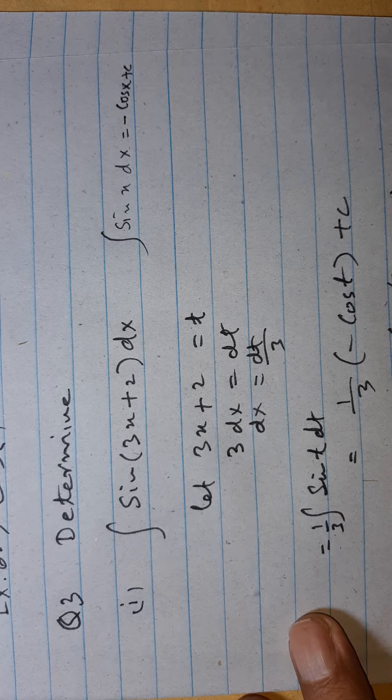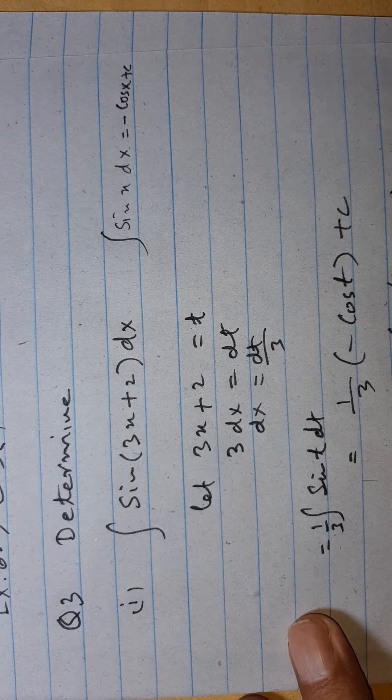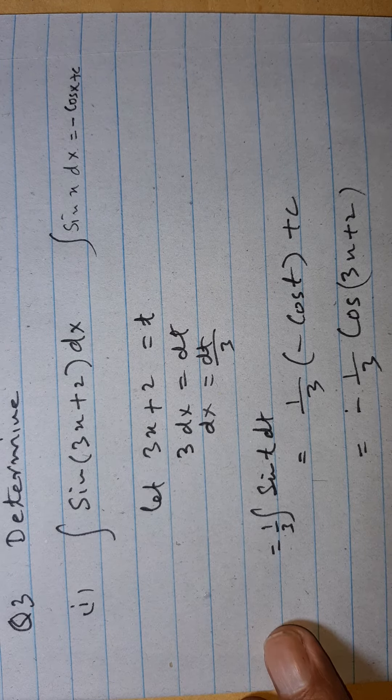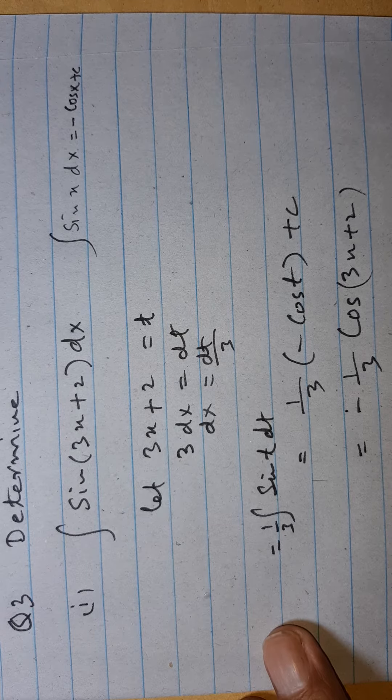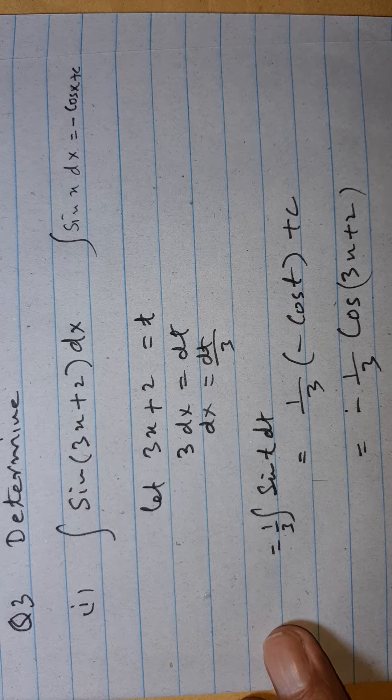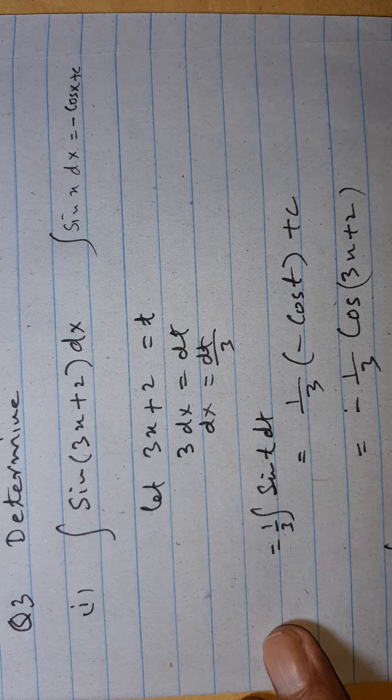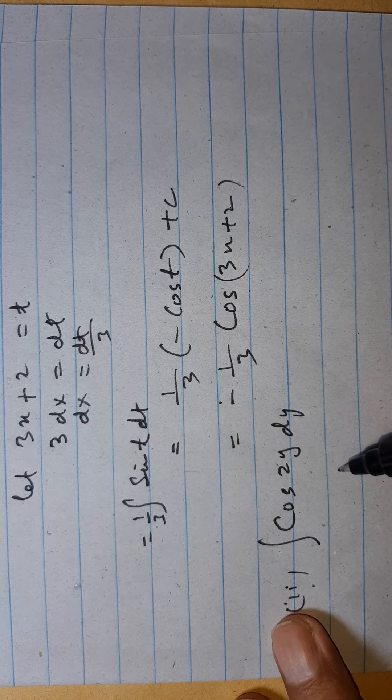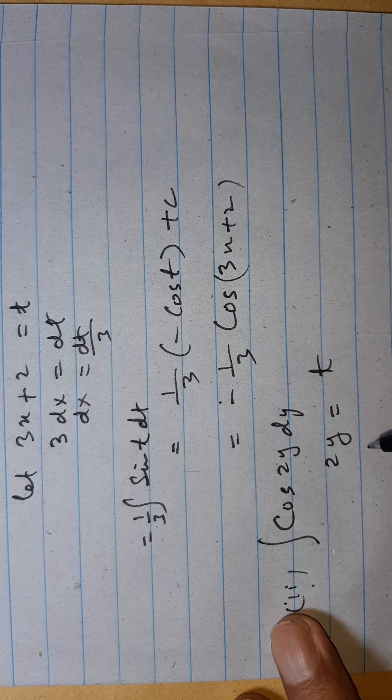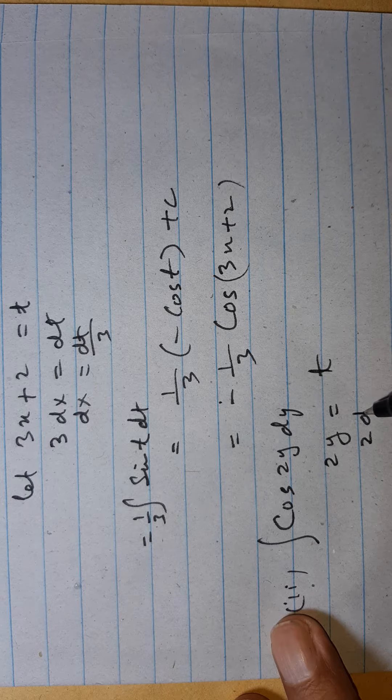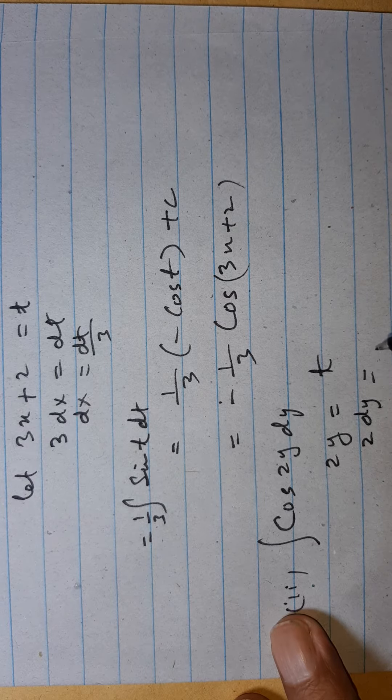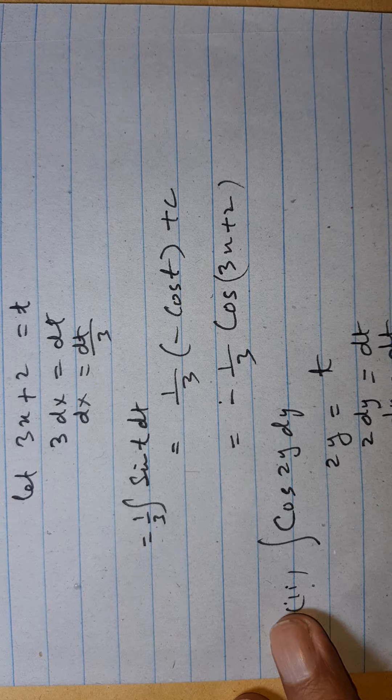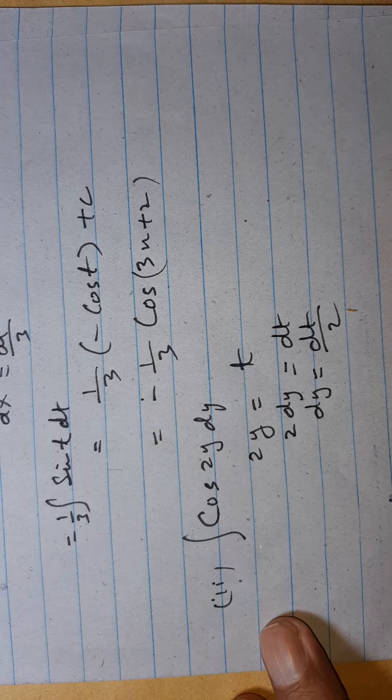Now we take part 2. This is integral cos 2y dy. Here we can suppose 2y is equal to t, then 2 dy is equal to dt, and dy is equal to dt over 2.